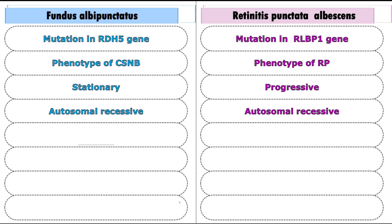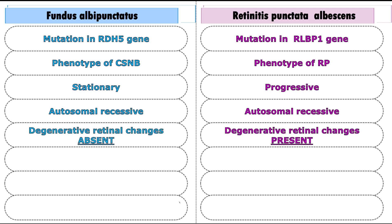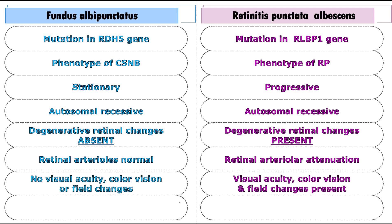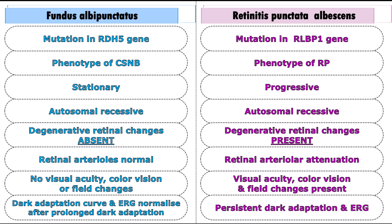Both are autosomal recessive. With progression, degenerative retinal changes are present in retinitis punctata albicens along with retinal arteriolar narrowing, diminished vision, color vision and visual field changes. In fundus albipunctatus, the dark adaptation curve and ERG normalize after prolonged dark adaptation, a feature that is absent in retinitis punctata albicens.